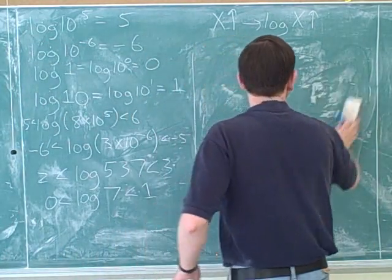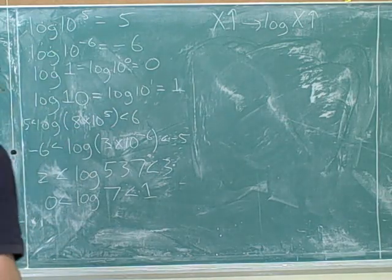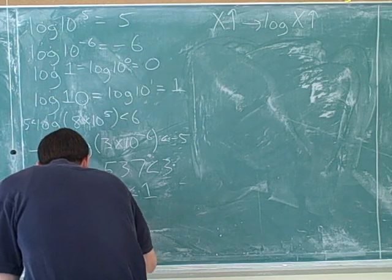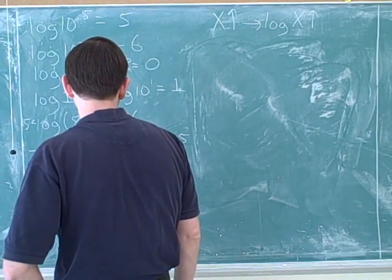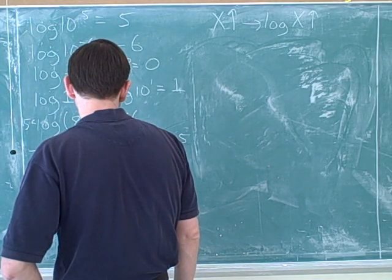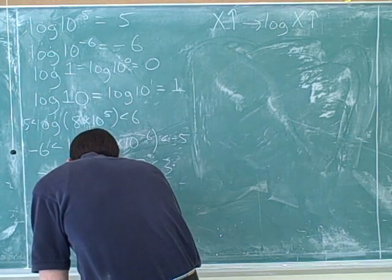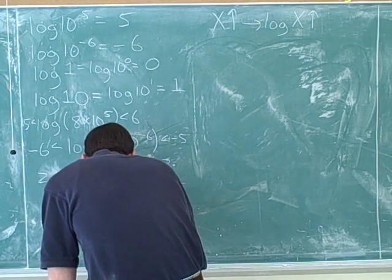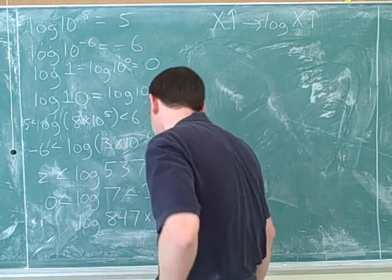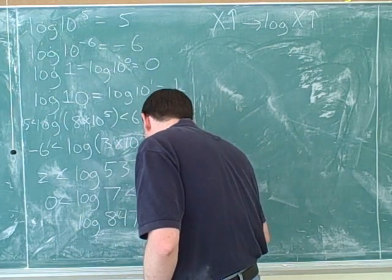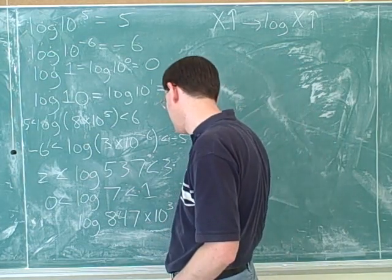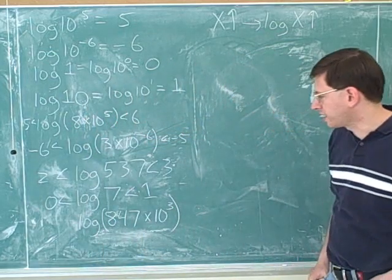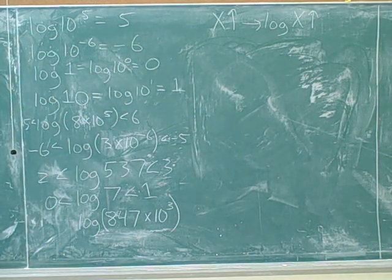So how about we take the log of three hundred and forty-seven... eight hundred and forty-seven times ten to the third. You want to take the logarithm of eight hundred and forty-seven times ten to the third — yeah, that would be good, so let's do that.